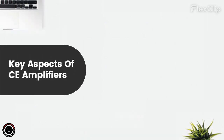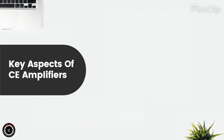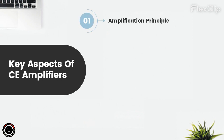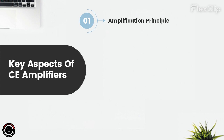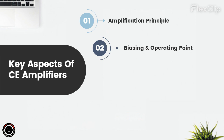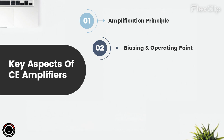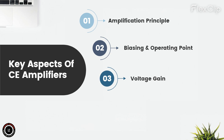Here are some key aspects that highlight the core elements of common emitter, CE, amplifiers. Amplification principle: CE amplifiers are designed to amplify weak input signals, making them stronger at the output. This process involves using a transistor in the common emitter configuration to control current flow and achieve voltage gain. Biasing and operating point: biasing is crucial to establish the transistor's operating point, ensuring it operates in the active region for linear amplification. Proper biasing maintains stability and prevents distortion.